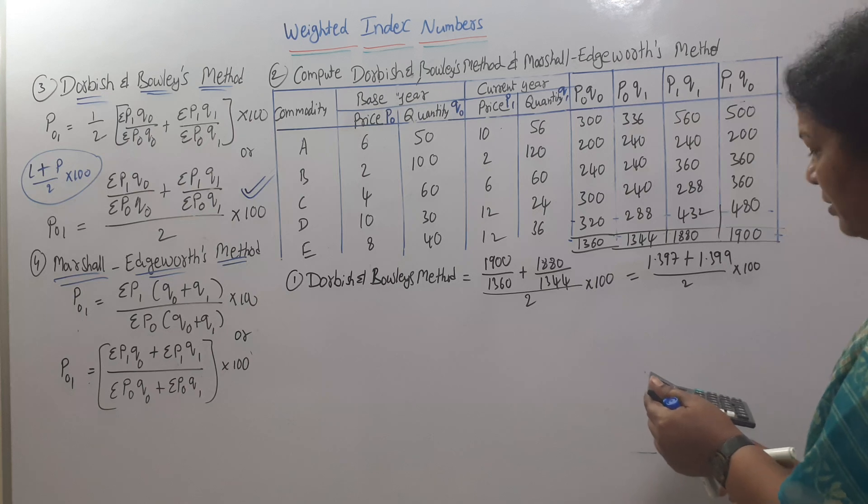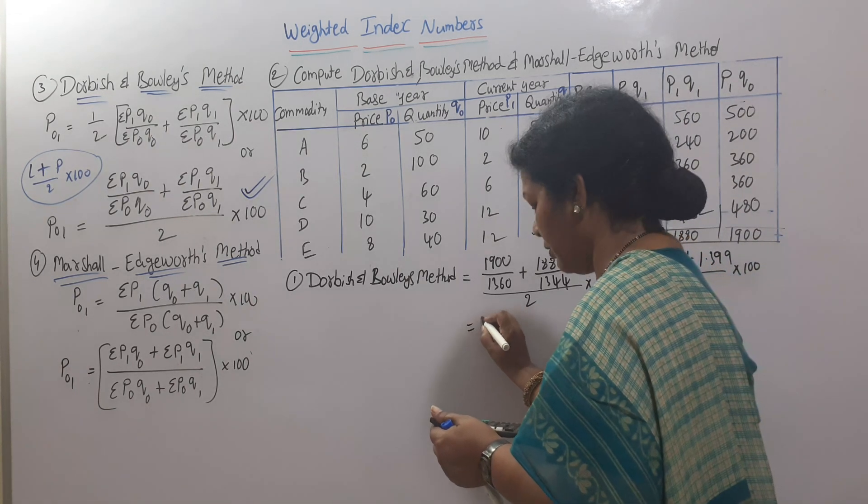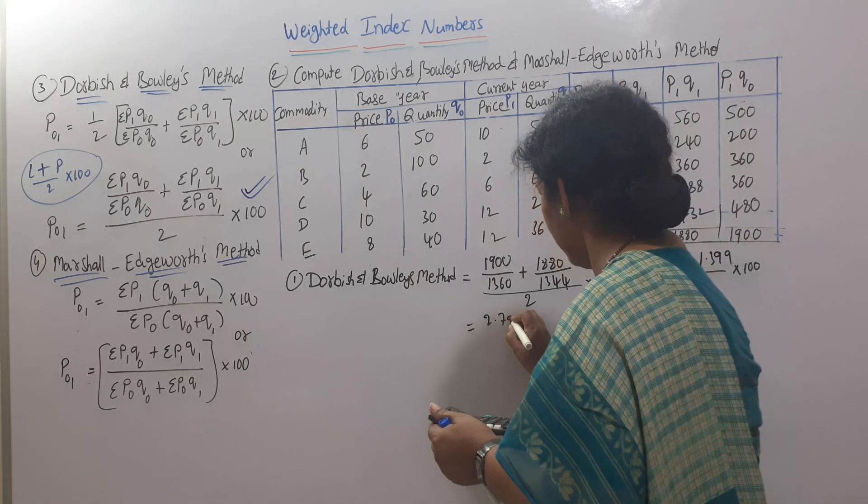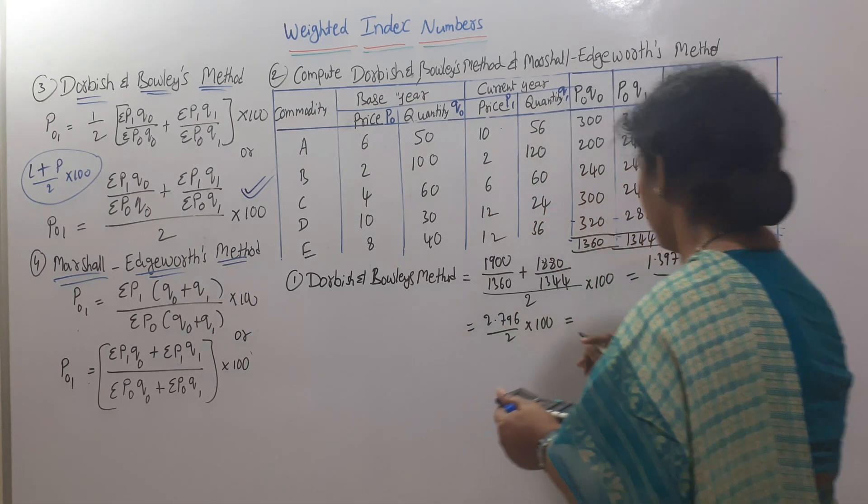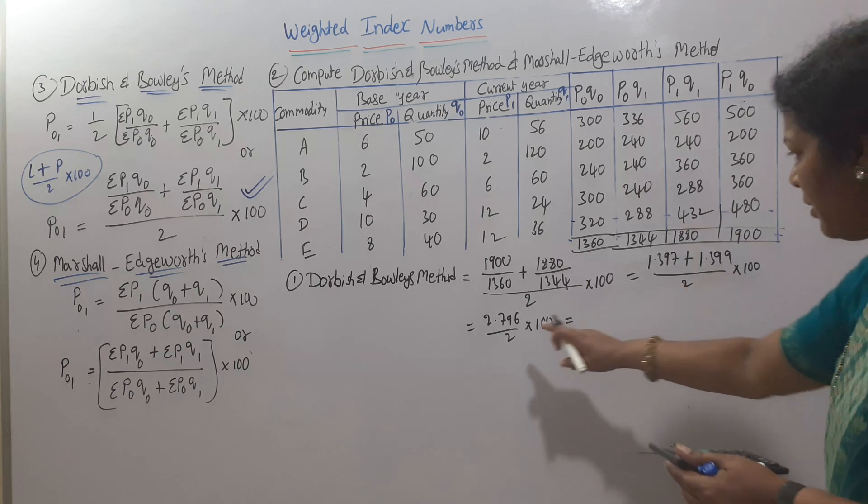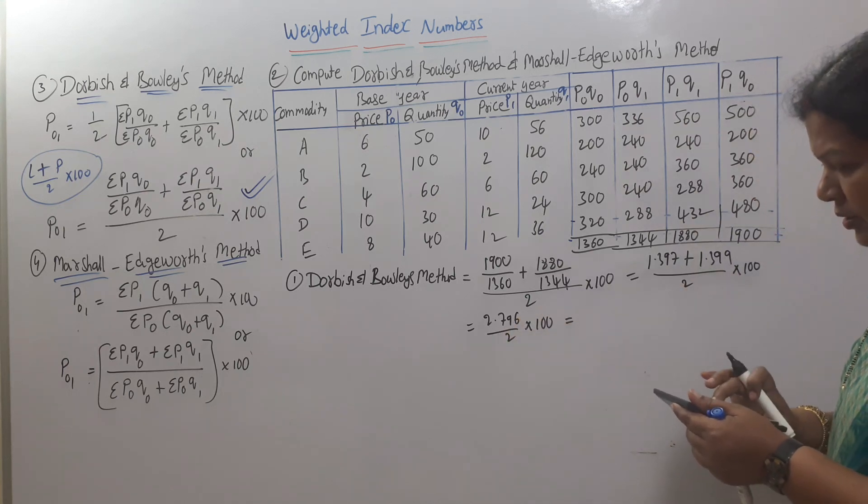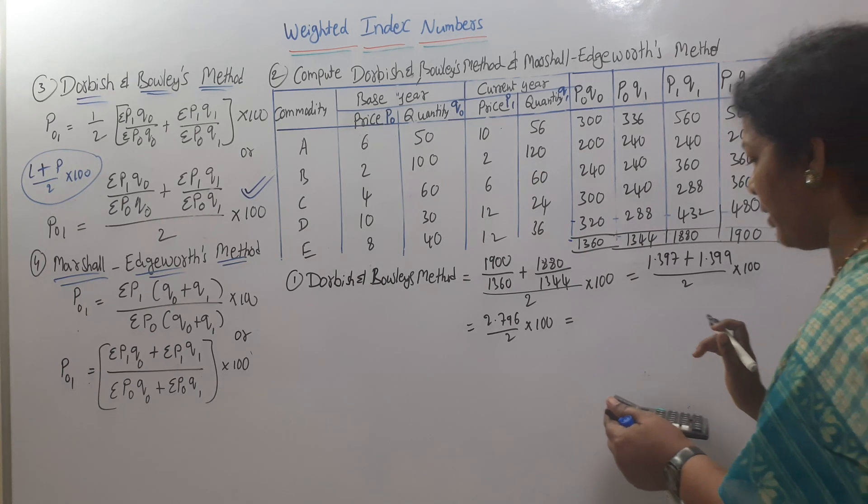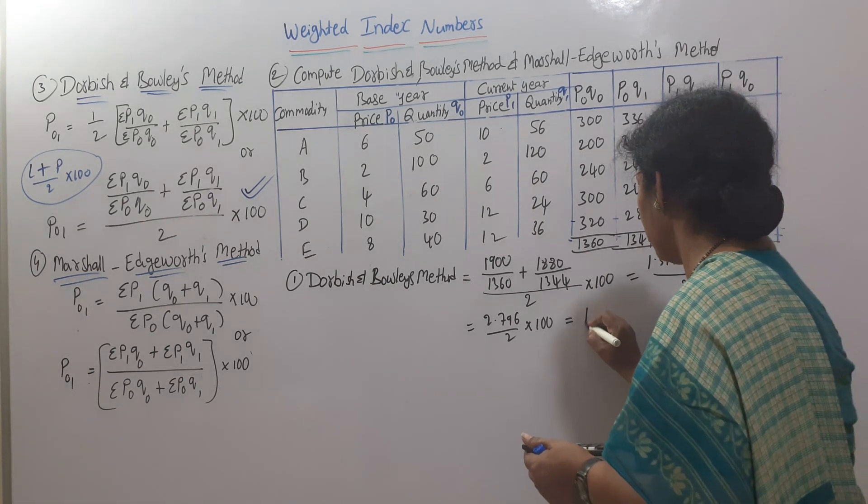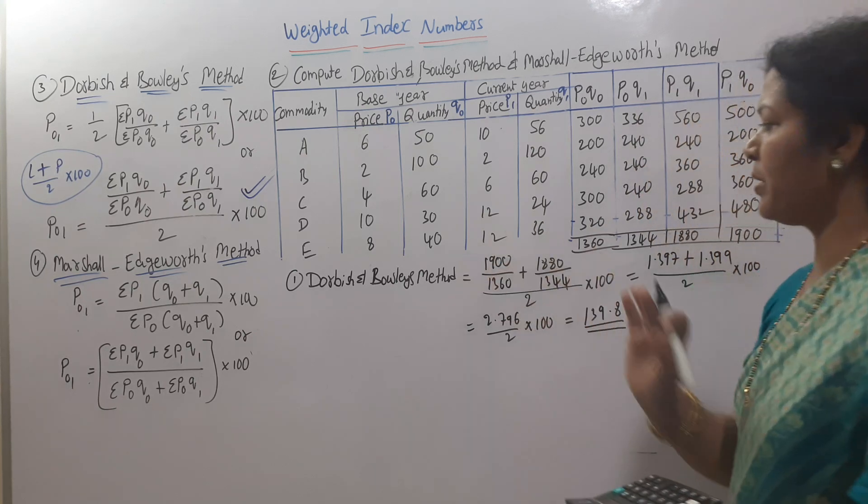First we add: 1.397 plus 1.399 equals 2.796 divided by 2 times 100, which gives us 139.8. This is the answer as per Dorbish and Bowley's method.